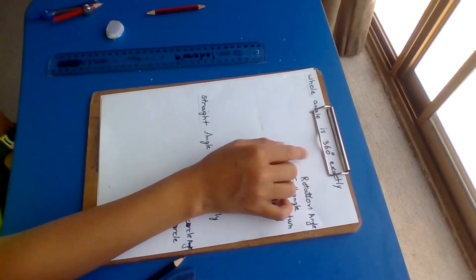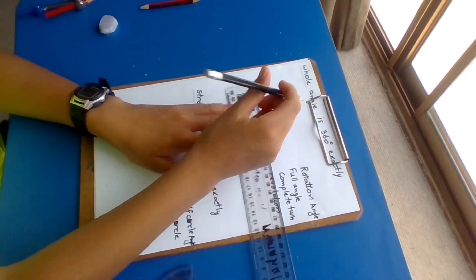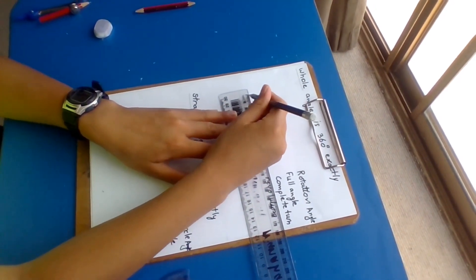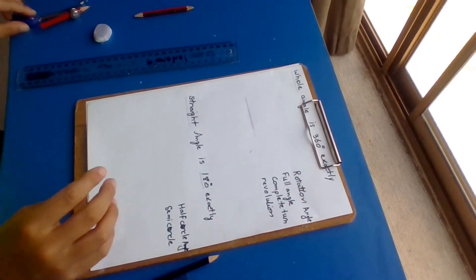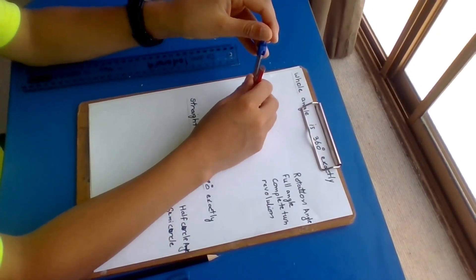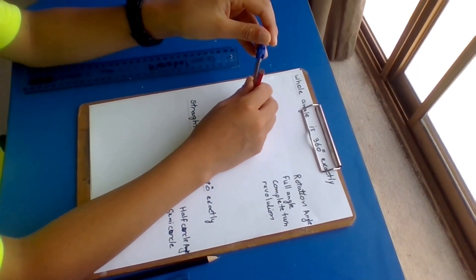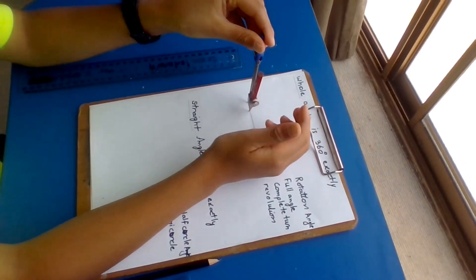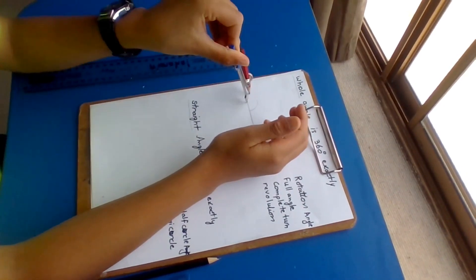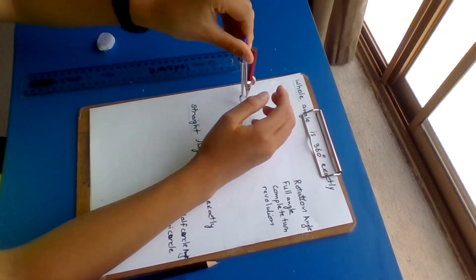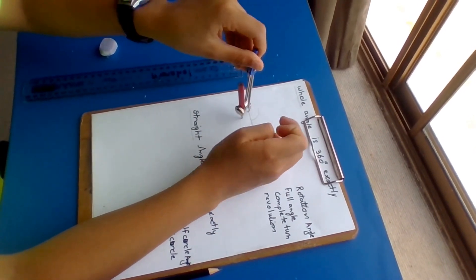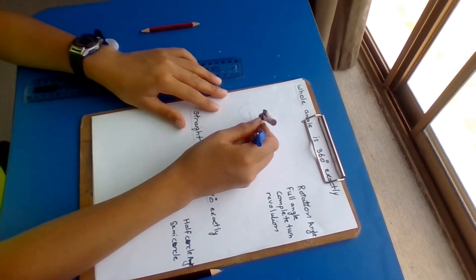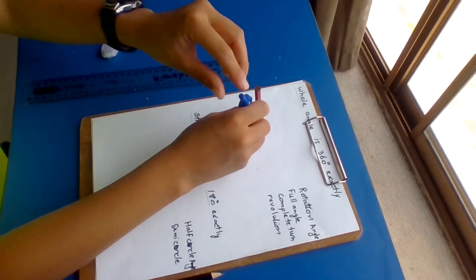It is exactly 360 degrees. First step: rule the line. Adjust the radius of the compass. Draw a full circle. Once I've done that, you want to draw an arc.